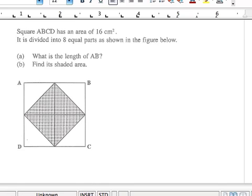The square and its area is actually equal to its side times its side. Next thing I'm going to read, it is divided into 8 equal parts. Very important information, 8 equal parts as shown in the figure below. The first question is, what is the length of AB?